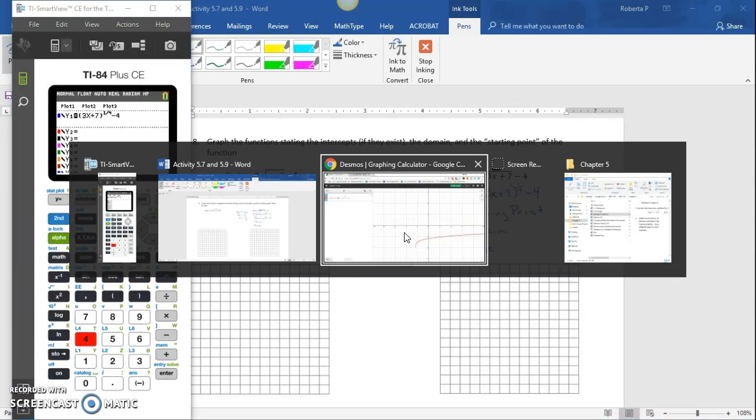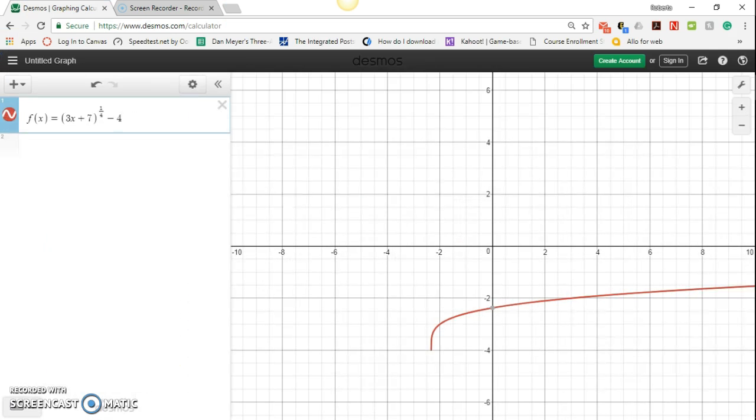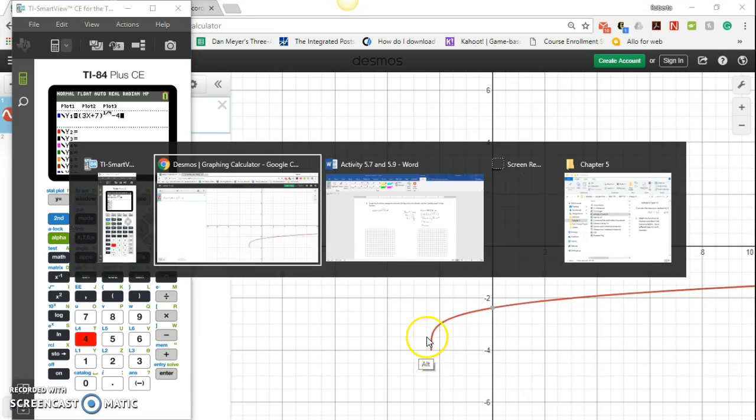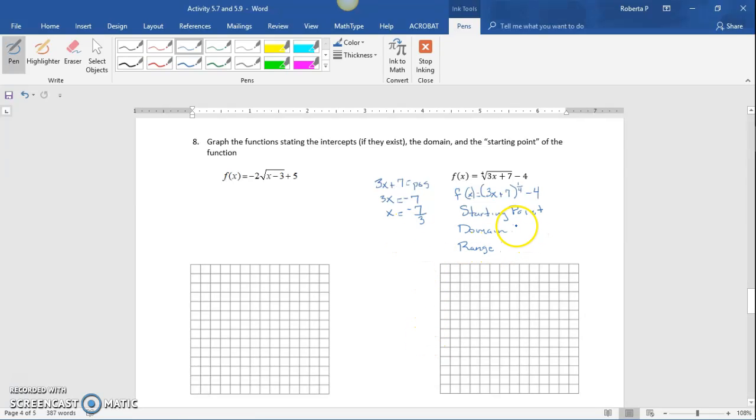If we use the tracer, we'll see it gets very close but doesn't actually show us there. We know it's negative 7/3, and the graph goes off to the right, so the domain is negative 7/3 less than or equal to x, less than infinity.